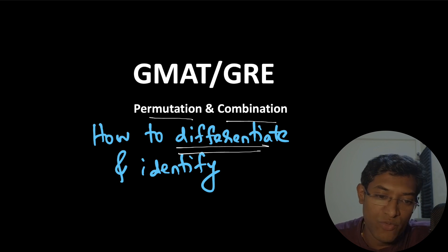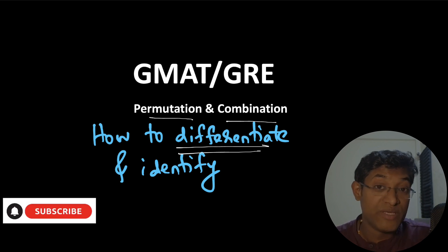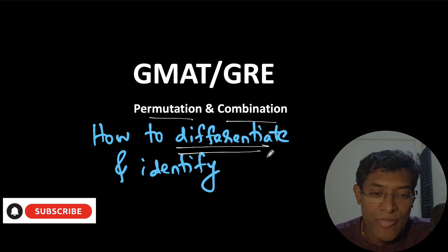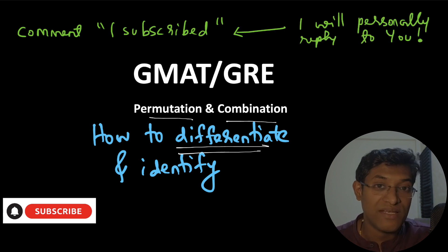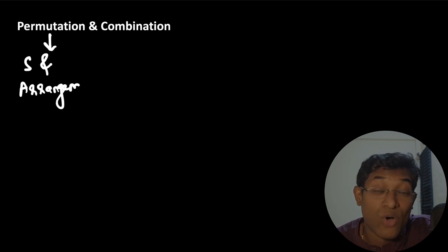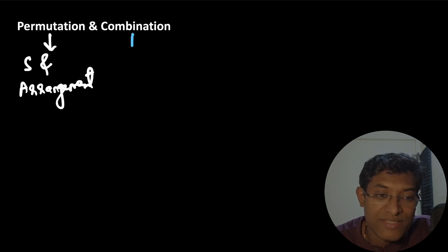So let's get started. Before we start, remember to subscribe to this channel — that would be a great motivation for me to keep making content for you — and also comment below 'I subscribed' and I will personally reply to you. So, being able to differentiate between permutation and combination requires thoroughly understanding when to use each. Both permutation and combination are just two techniques of counting. Permutation is about selection and arrangement, and combination is just selection.